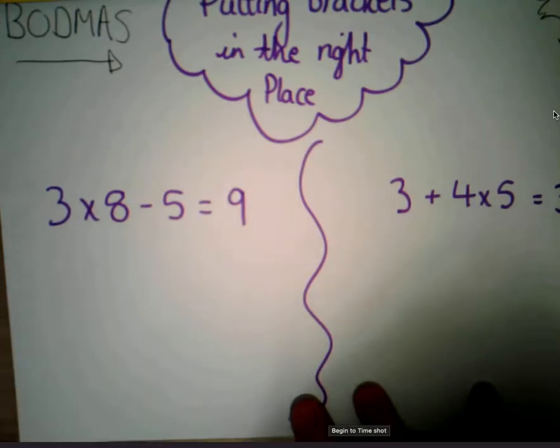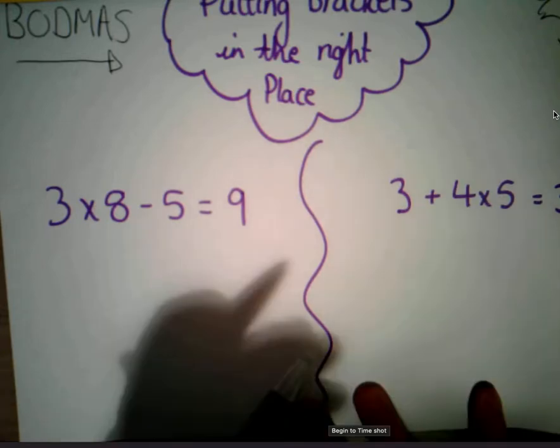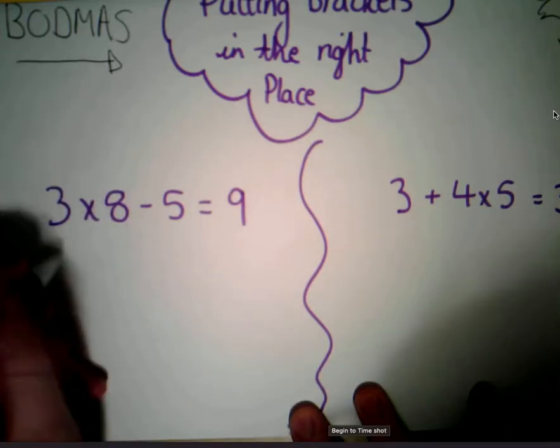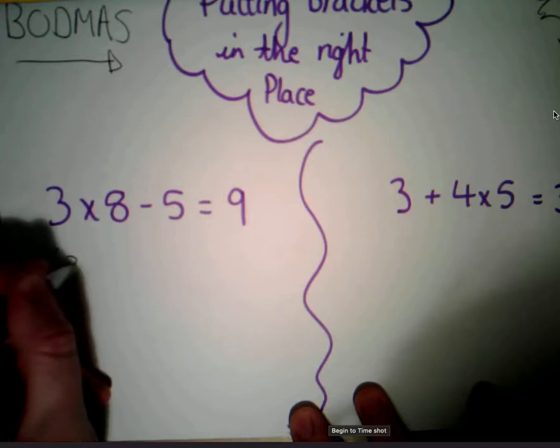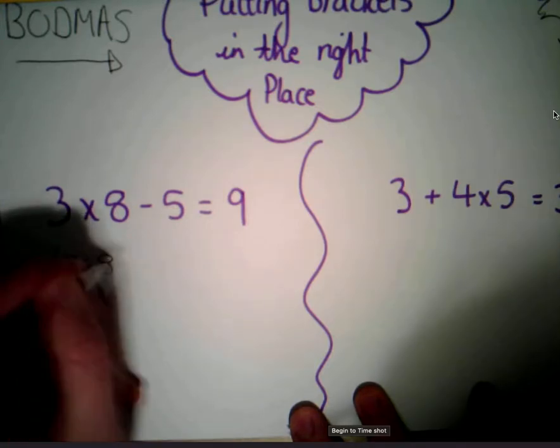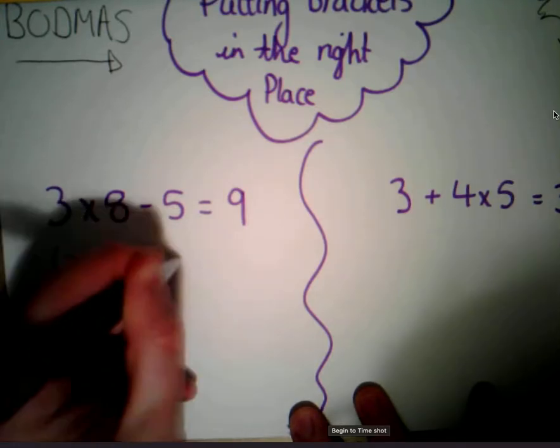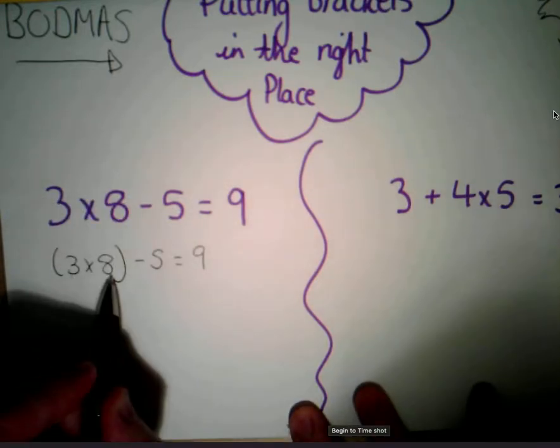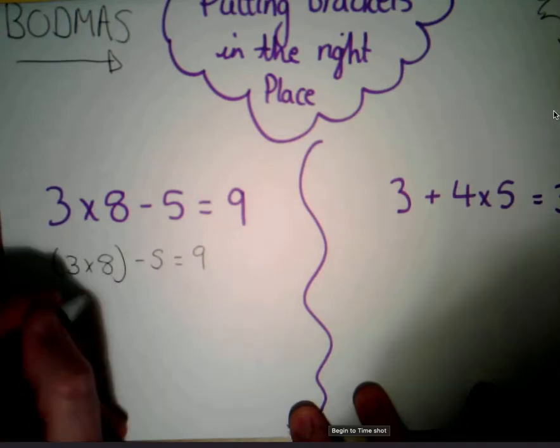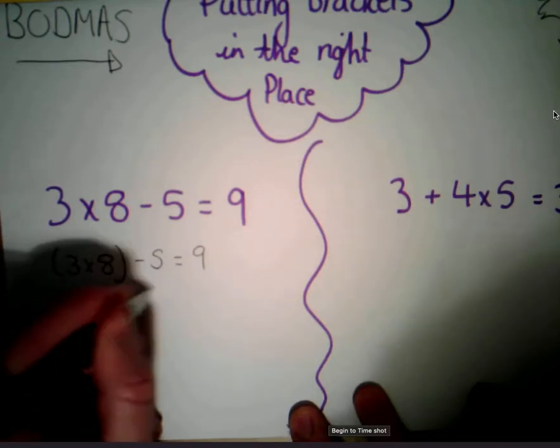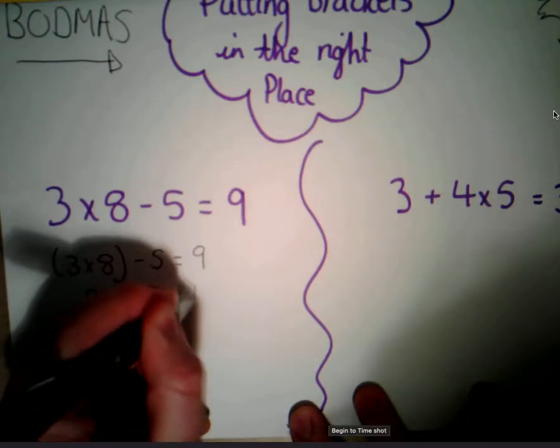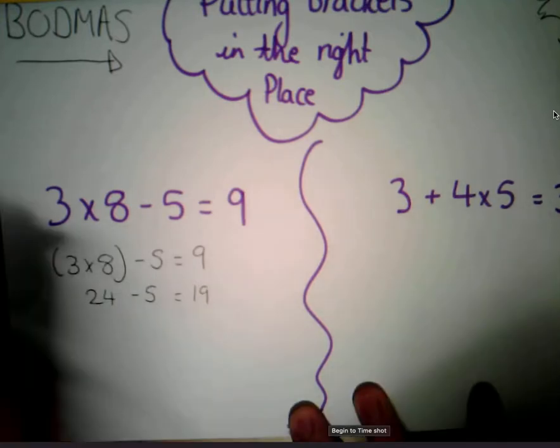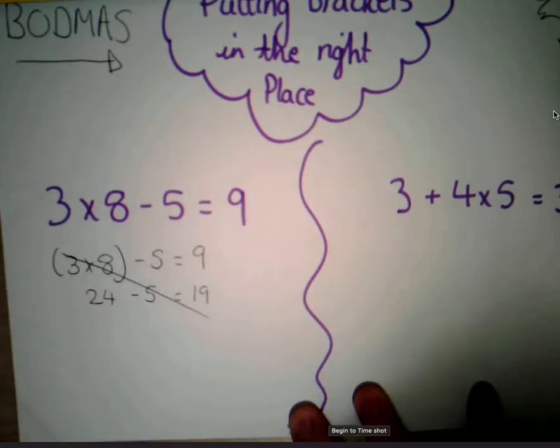Let's try, and the only way you can do this is trial and error. If I put the brackets in here and say that three times by eight in brackets, take away five equals nine. If I now try and work that one out, well three times eight, so eight and eight is 16, 24, take away five would equal 19. So straight away I know it can't be there.